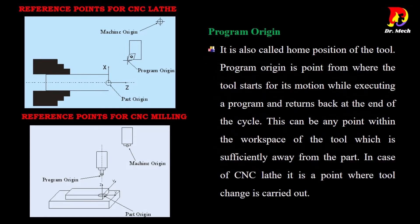Program origin: It is also called home position of the tool. Program origin is point from where the tool starts for its motion while executing a program and returns back at the end of the cycle. This can be any point within the workspace of the tool which is sufficiently away from the part. In case of CNC lathe, it is a point where tool change is carried out.